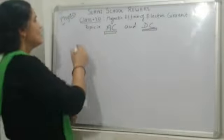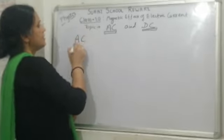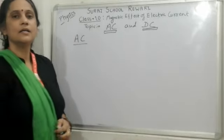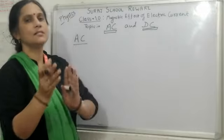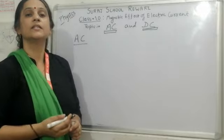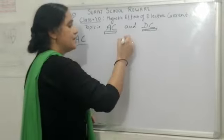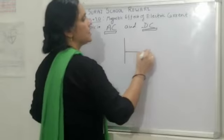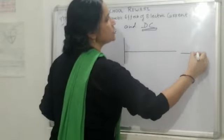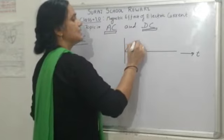AC means alternating current. Alternating current in which current changes its direction with time. Jis mein samay ke saath uski current ki direction mein change hota hai. That is called AC current.